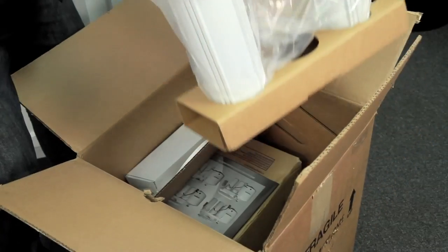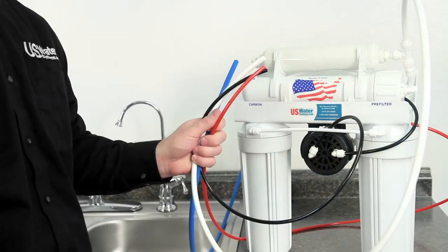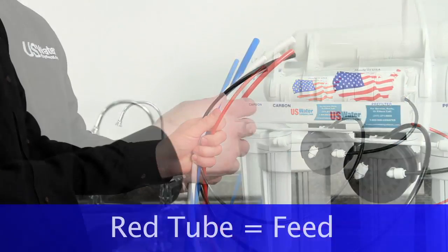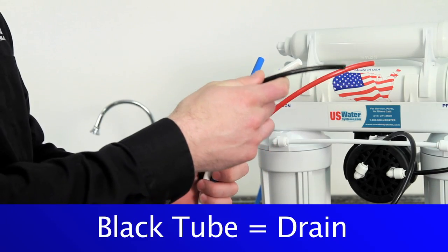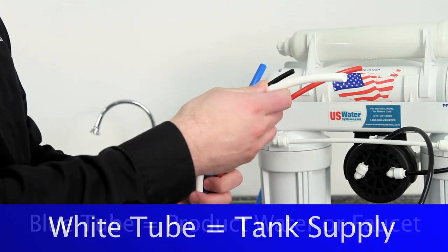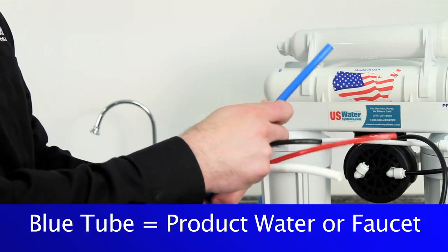When you receive your reverse osmosis system, the first thing you need to do is remove the module from the box. Attached to the module are four colored tubing. The red tube is the feed, the black is the drain, the white is the tank supply, and the blue tube is for the product drinking water or to the faucet.